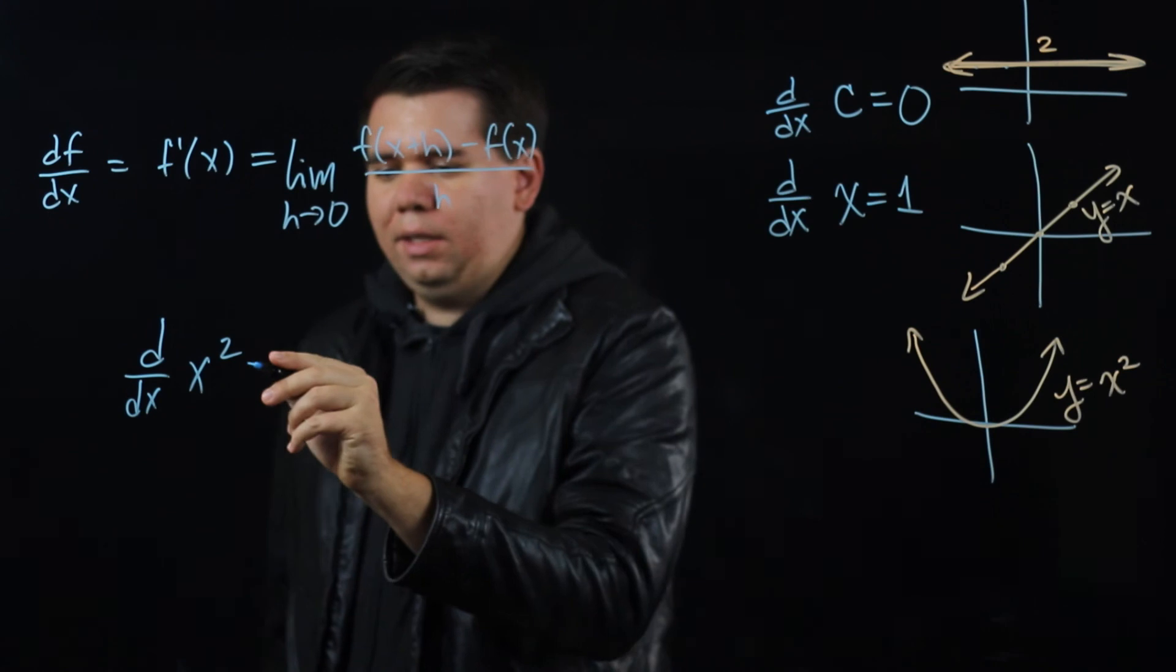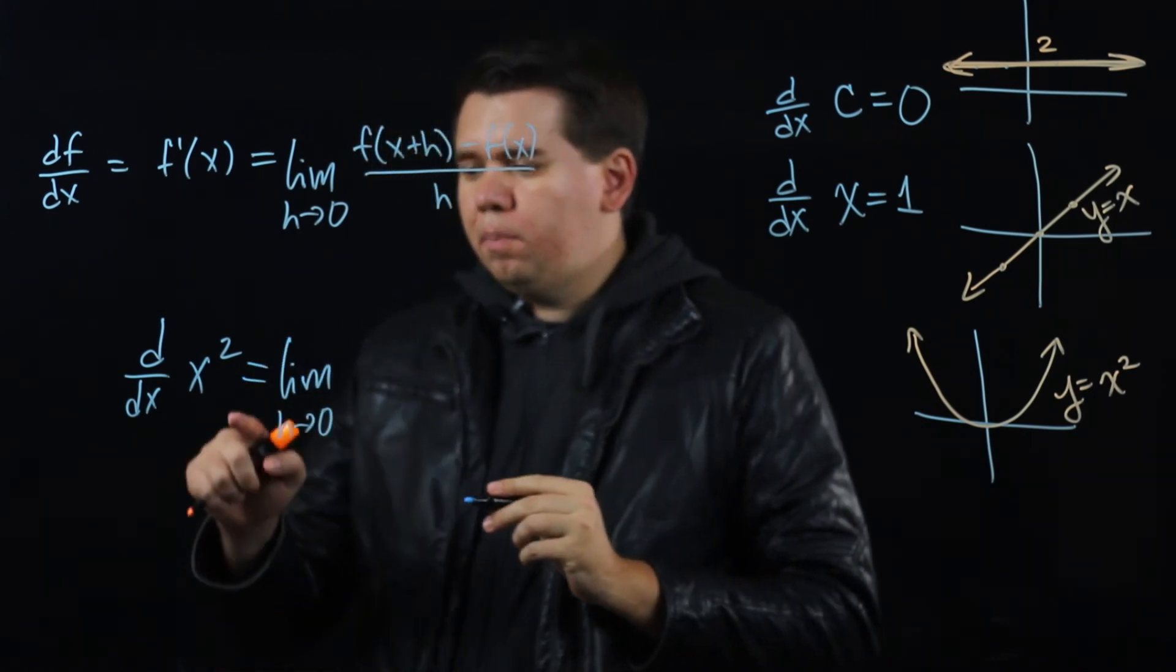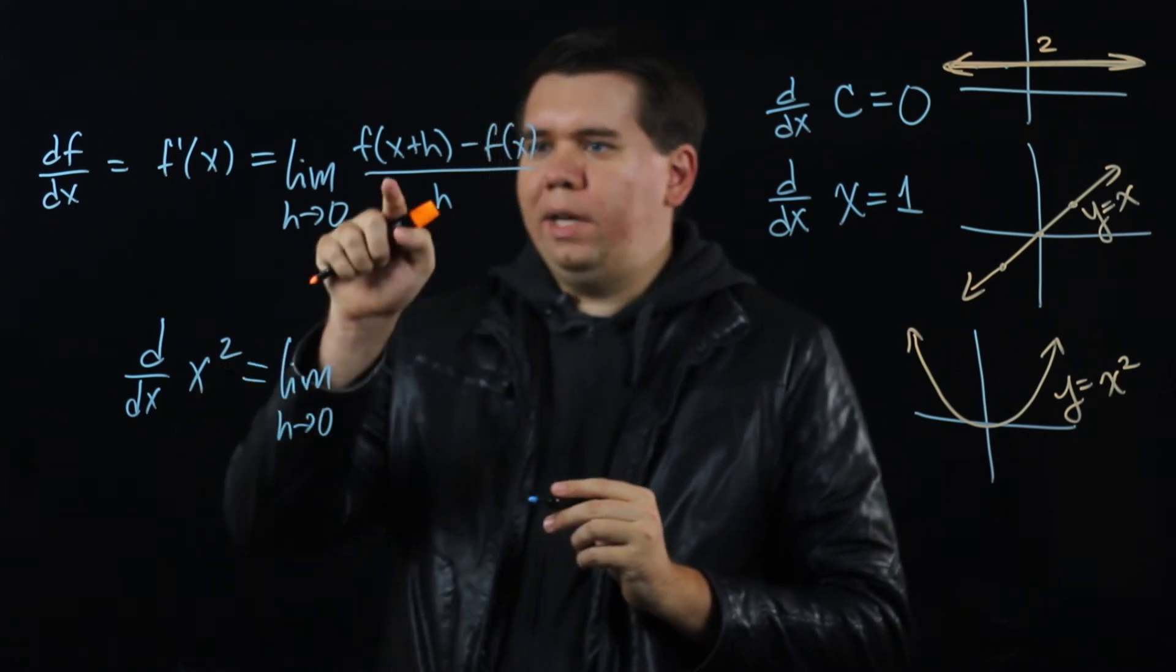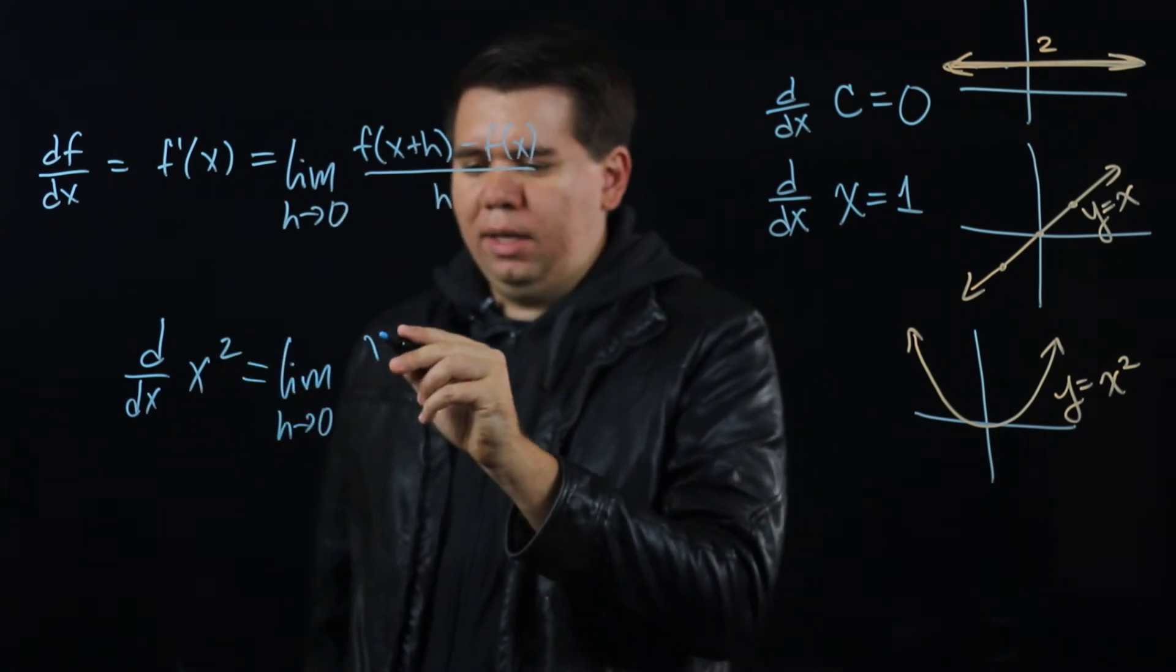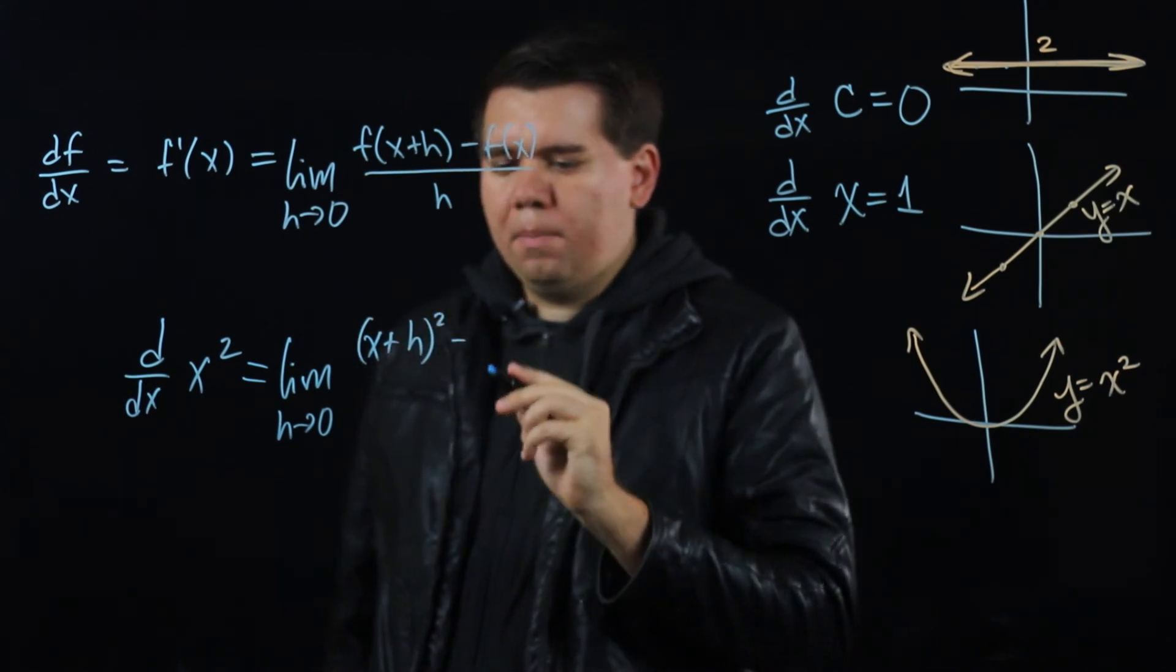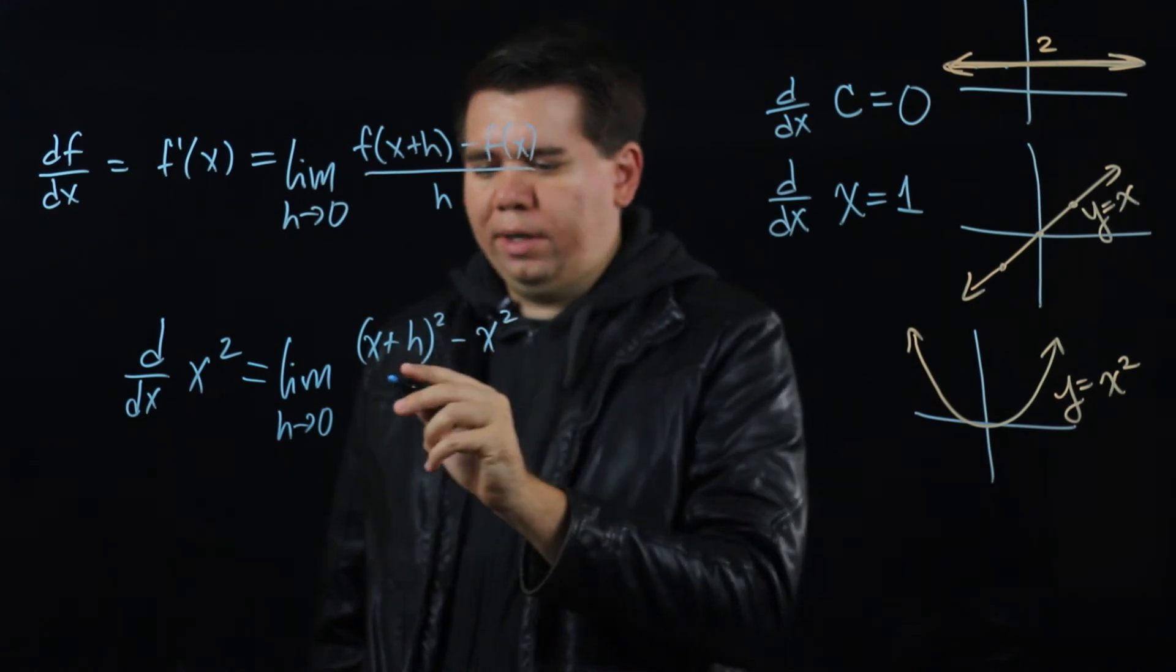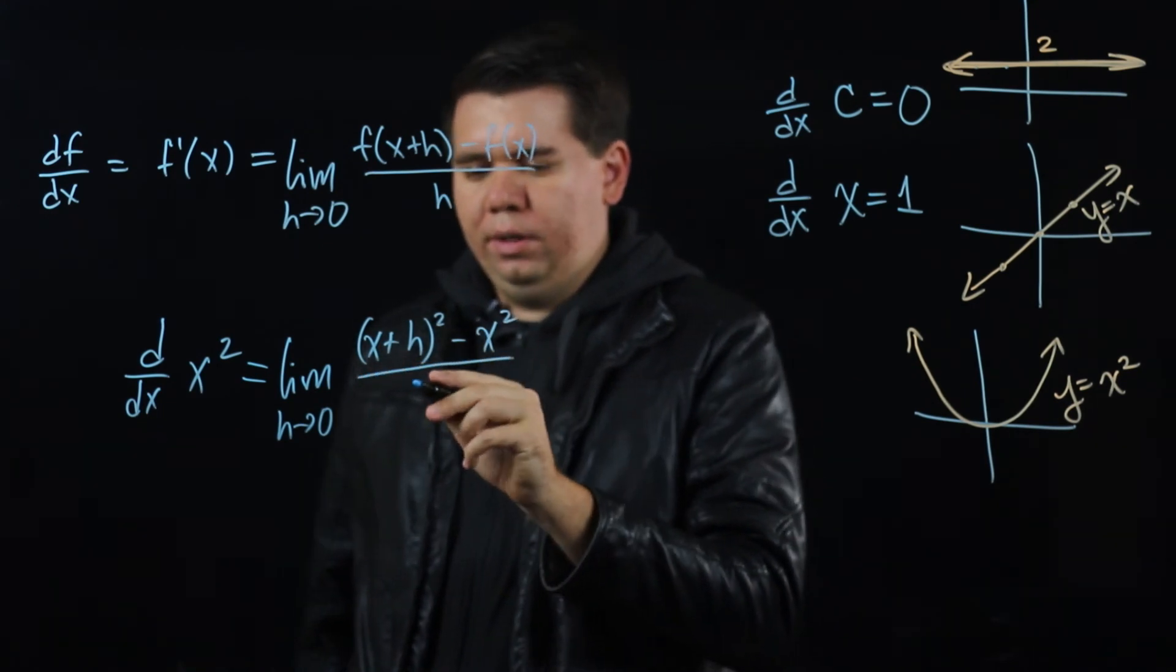Okay, let's see what we get. The limit as h goes to 0. Plug in to your x squared, x plus h. You get (x+h)² minus plug in x, so you just have x² all over h.